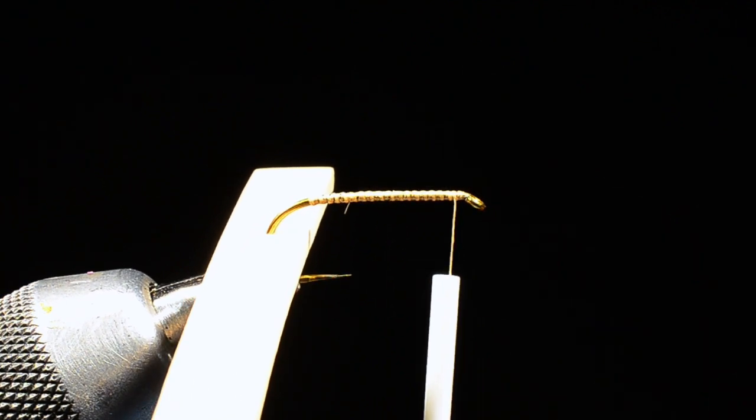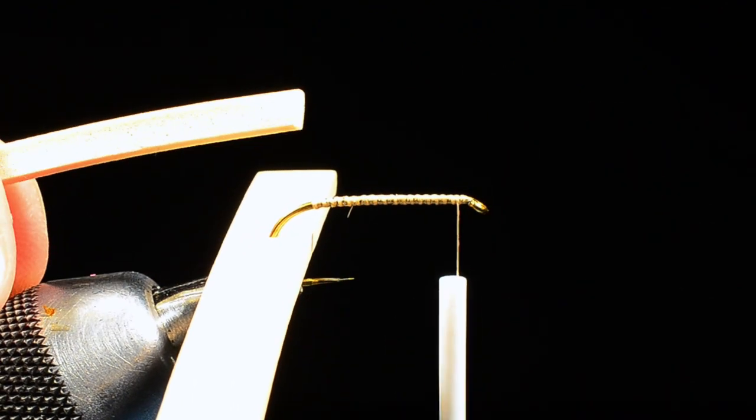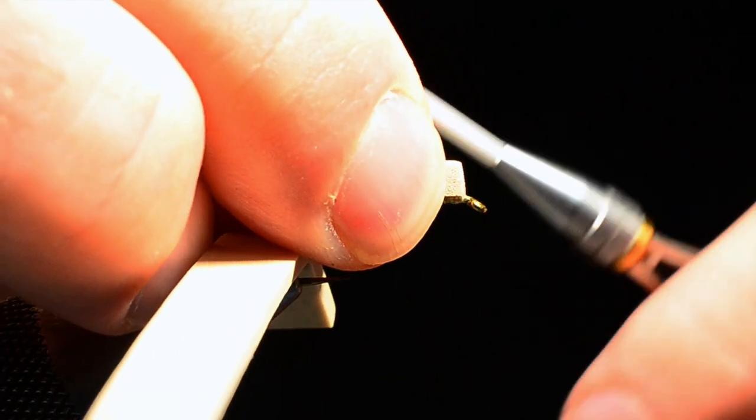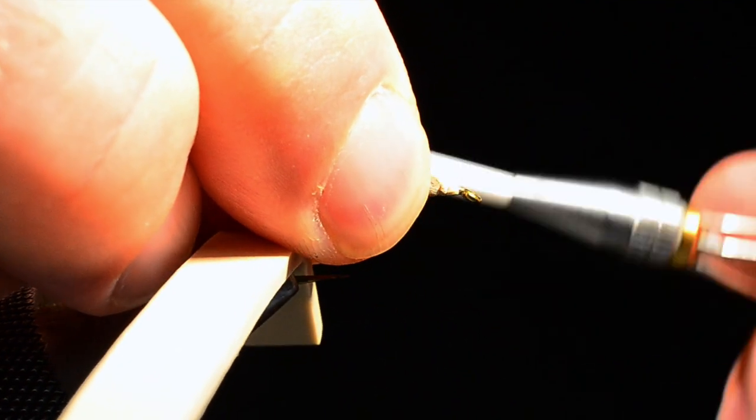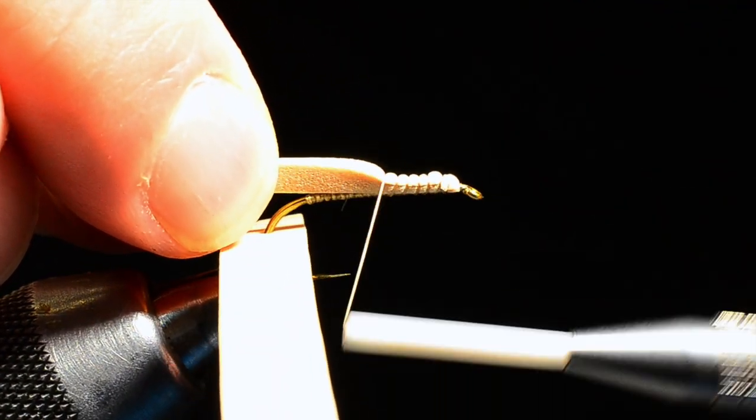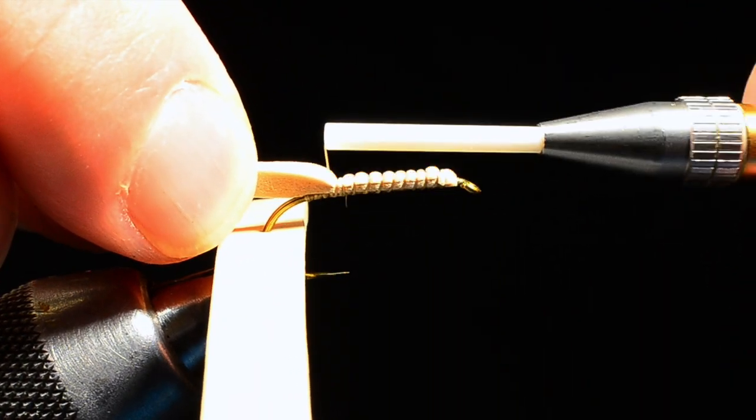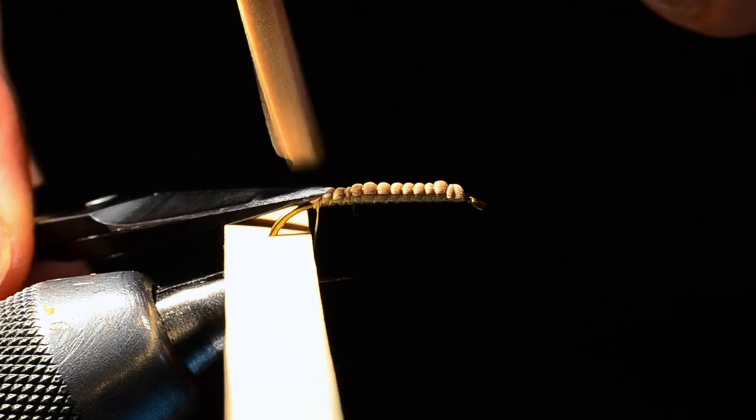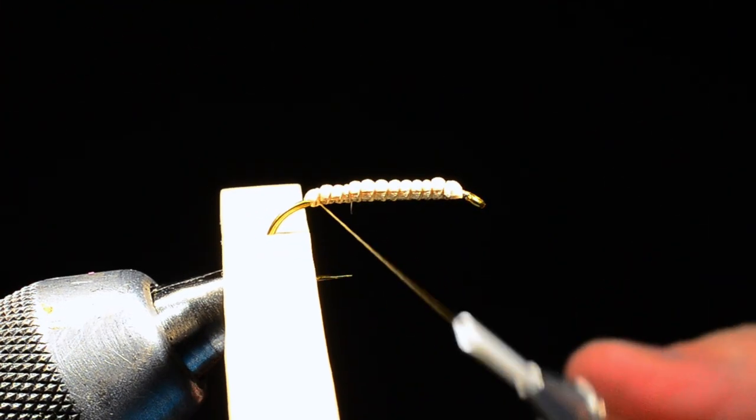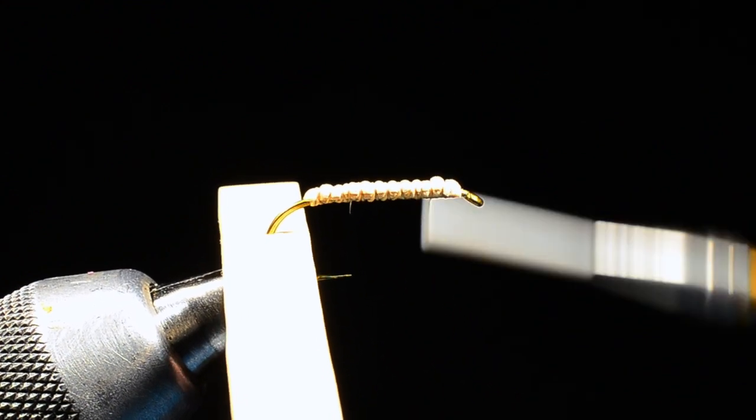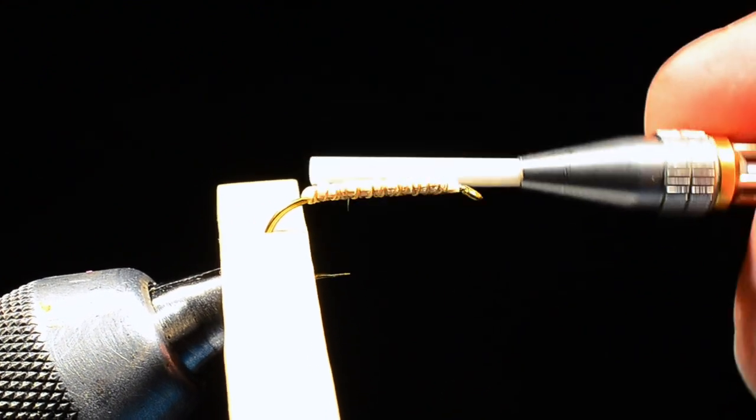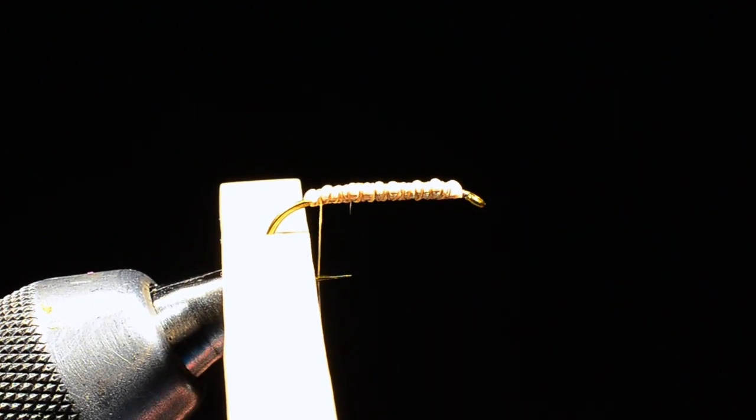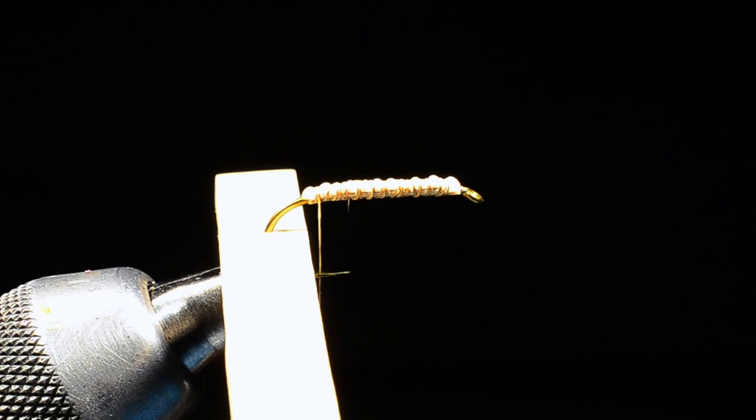Then I'll take my thread, and I'm going to start it just up here behind the hook eye, and I'll just dress the hook shank all the way back to the last straight portion of the shank. And then I'll come forward again. Once I get to the front, I'll take that scrap of foam that we reserved off to the side, and I'm just going to catch it here behind the eye, and just spiral back over all the way to the bend. And what this is going to do is create a gluing surface for us.